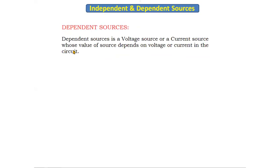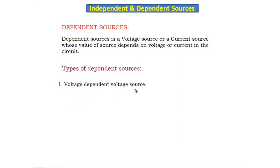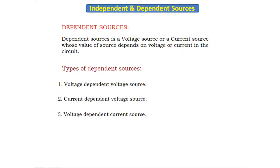Now let's see what is a dependent source. As the name implies, it depends on some other quantity. A dependent source is a voltage source or current source whose value depends on voltage or current elsewhere in the circuit. There are four types of dependent sources: voltage dependent voltage source, current dependent voltage source, voltage dependent current source, and current dependent current source. Dependent sources are used in amplifier circuits.